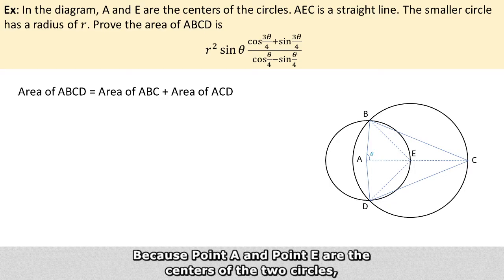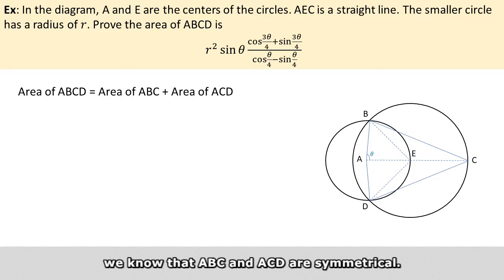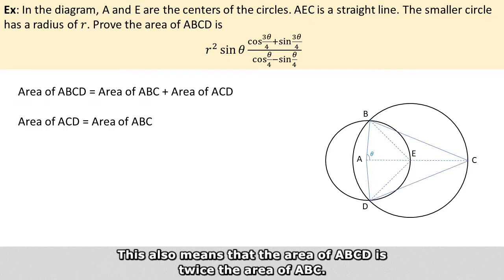Because point A and point E are the centers of the two circles, and given that AEC is a straight line, we know that triangles ABC and ACD are symmetrical. This also means that the area of ABCD is twice the area of triangle ABC.